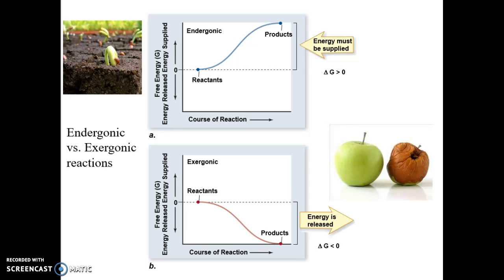The two types of reactions we're going to explore are endergonic and exergonic. Endergonic refers to input — energy has to go into it in order for it to occur. Look at the bean seeds germinating: that takes a lot of energy; the stored energy within the bean seed is getting converted, fueling the growth of the bean plant. The exact opposite, exergonic, means exiting or releasing energy. The apple on the right, over time decomposing and rotting and falling apart — that's easy. It releases energy. Nature likes exergonic reactions.